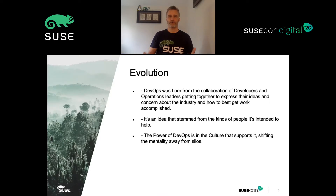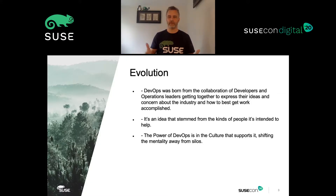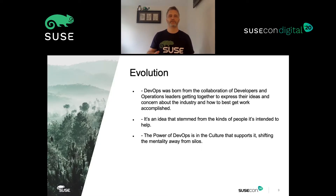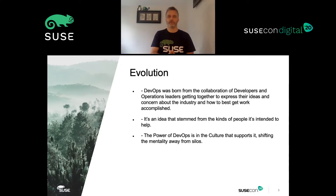Let me start with a quick recap of what led us here and where DevOps originated from. Unfortunately, the word DevOps means a lot of different things to a lot of people. This can be a challenge when you're trying to understand or define DevOps. Ultimately, DevOps was born from the collaboration of developers and operations getting together, expressing their ideas and concerns about the industry and how to best get the work accomplished.